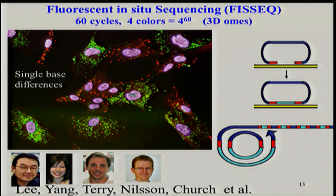We can do next-gen sequencing in situ using a variety of next-gen sequencing methods with very light amplification, leaving the molecules in place. These are RNAs, but you can also do this with DNA. Each single dot is a single molecule of RNA, lightly amplified and then next-gen sequenced. You can see two adjacent cells differing by one base pair and one messenger RNA type. You can get the whole transcriptome this way — effectively four-to-the-60th colors, or sequence tags.